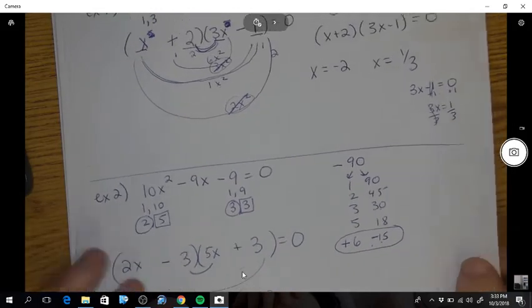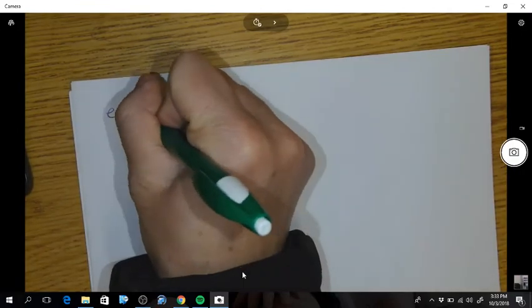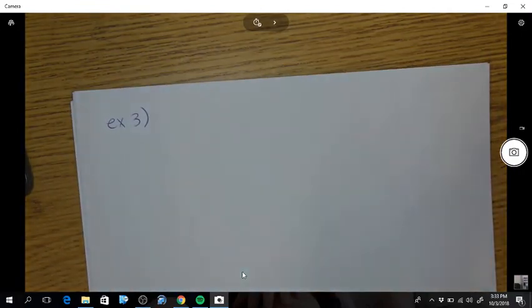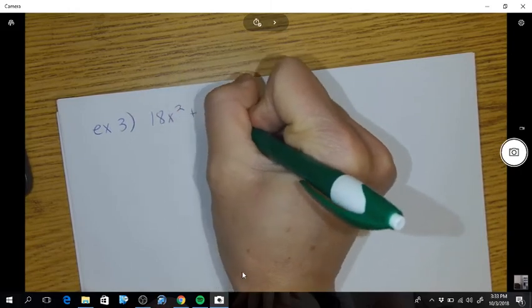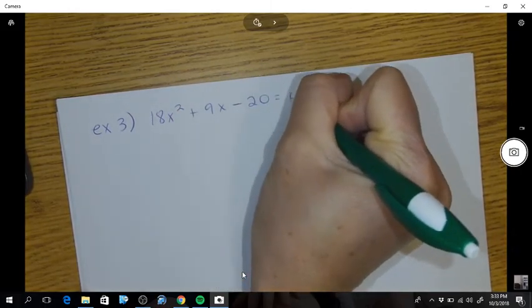Okay, I'm going to show you example 3 in another way. So you can pick. Okay, 18x squared plus 9x minus 20 equals 0.